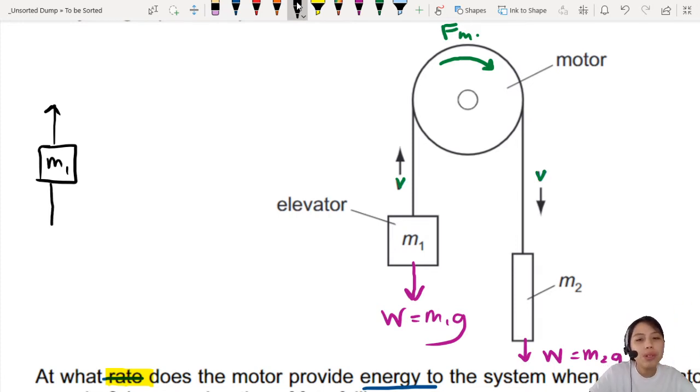Then you have some kind of force also downwards. Which is weight. So let's label that weight. What is weight on this side? Just M1G. The other side is tension.